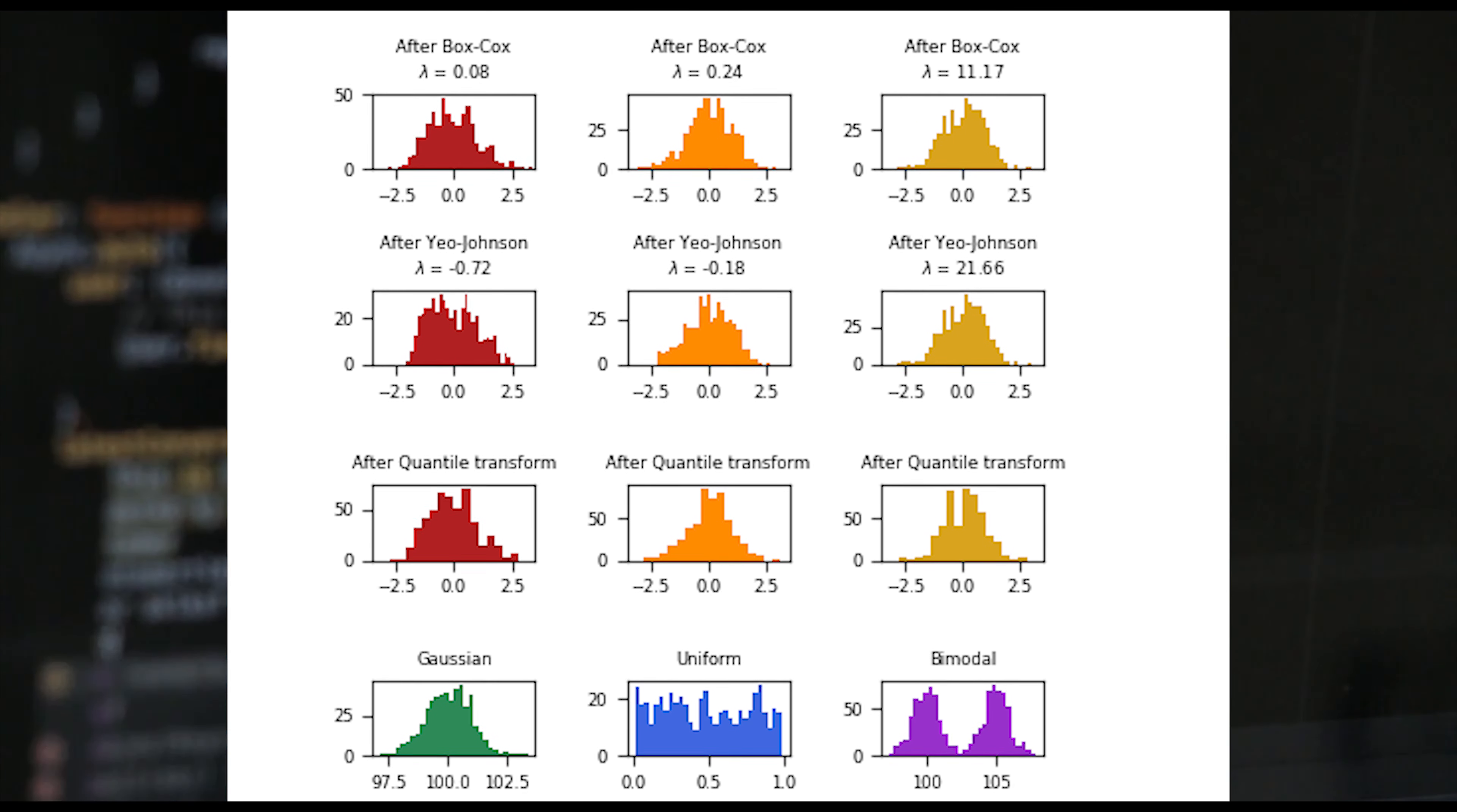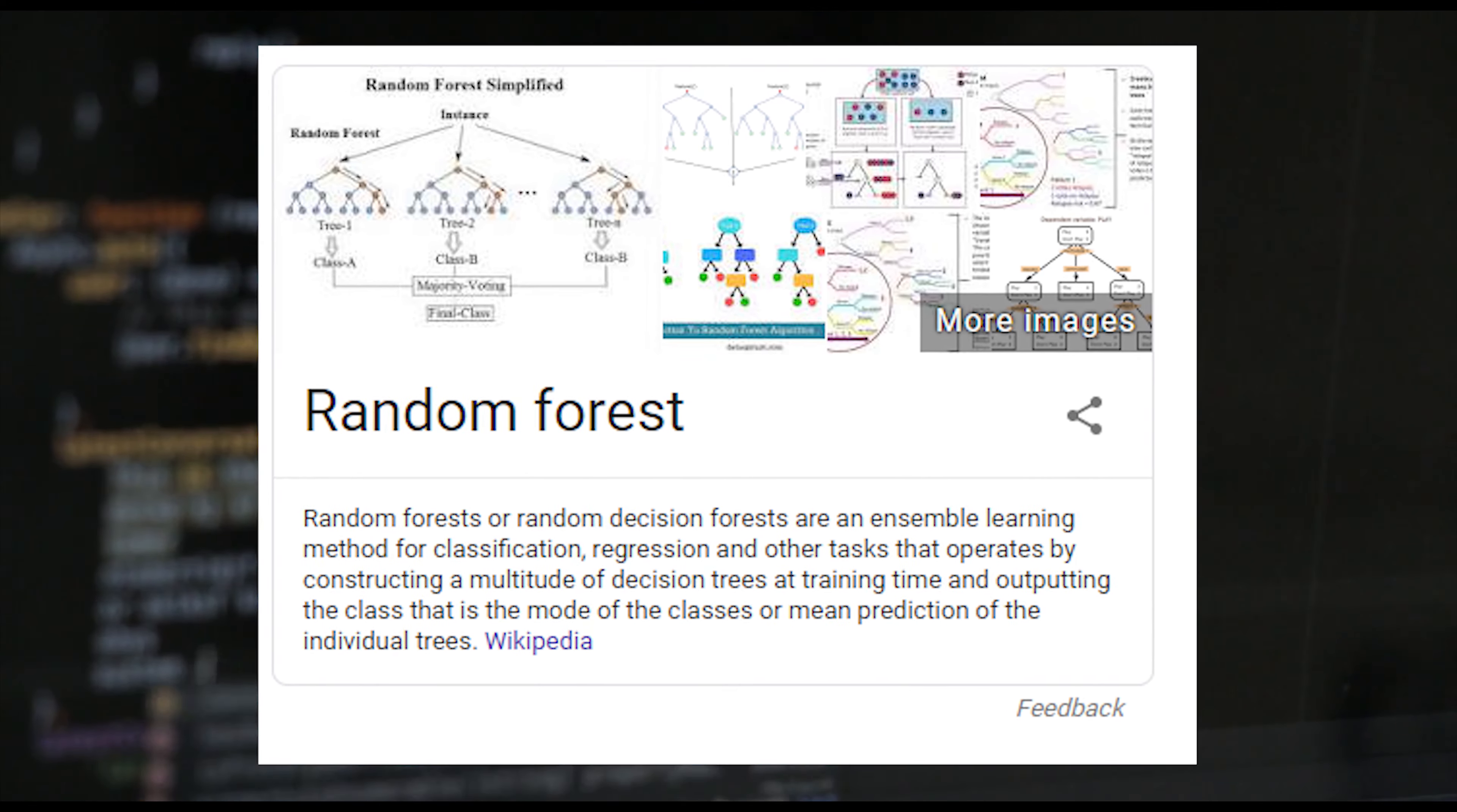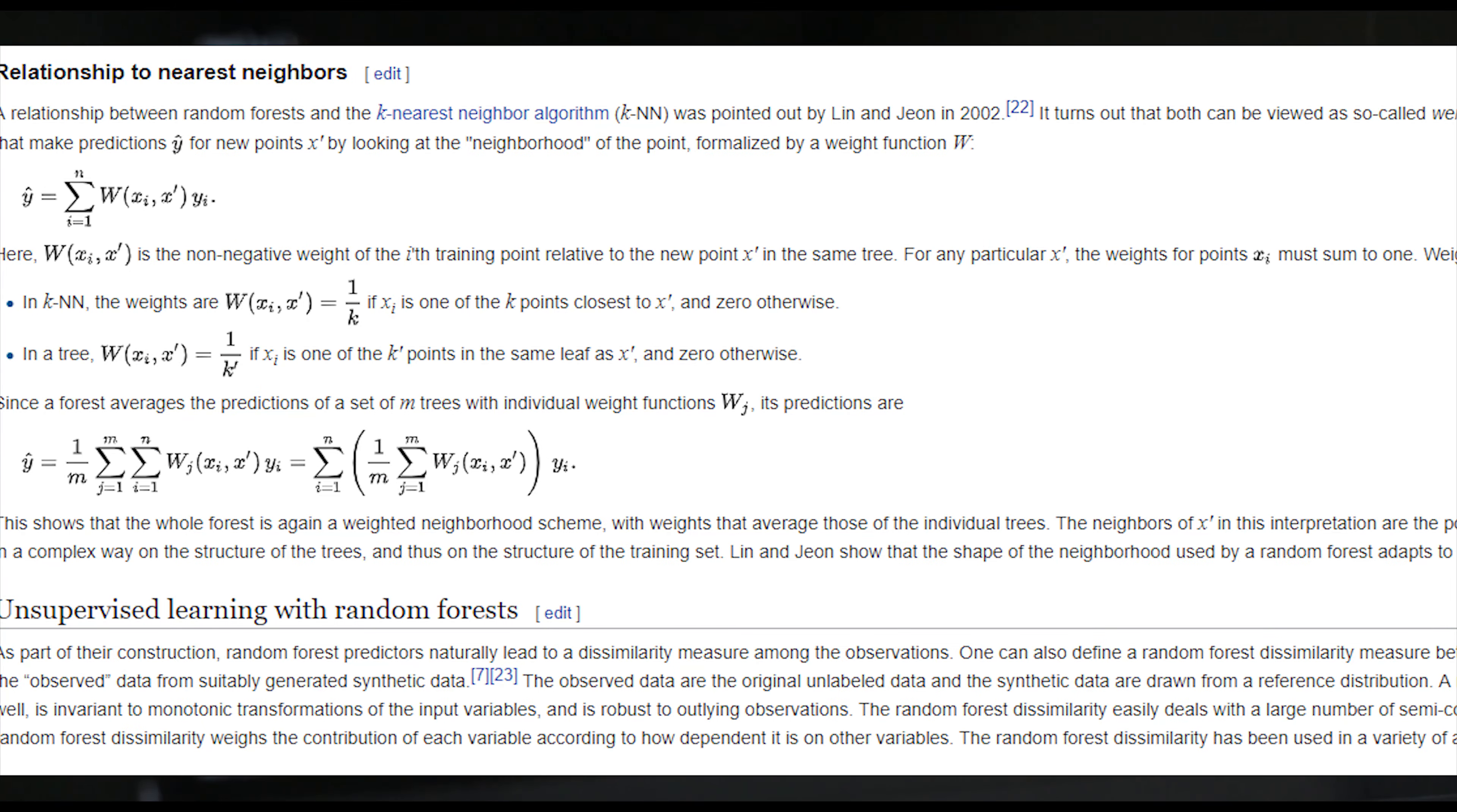Well, why do we need to pre-process our data? In order to achieve a better result in a machine learning project, the format of data has to be in a proper manner. Some specified machine learning models need information in a specified format. For example, random forest algorithm does not support null values. Therefore, to execute a random forest algorithm, null values have to be managed from the original raw data set.